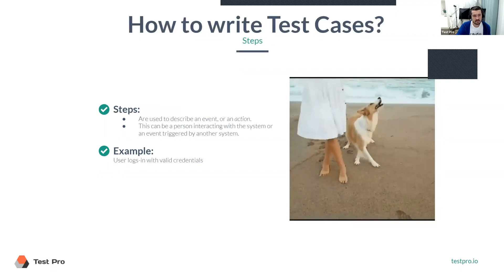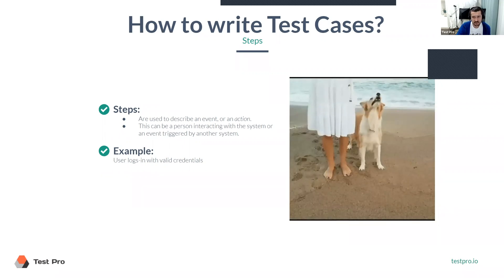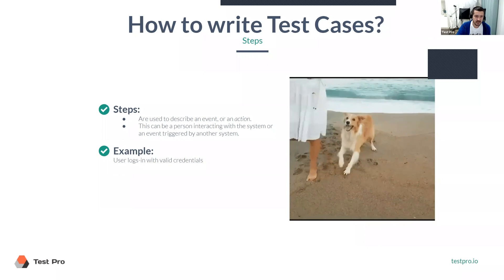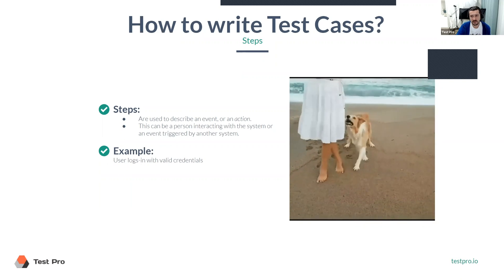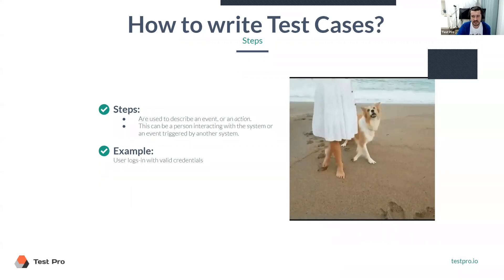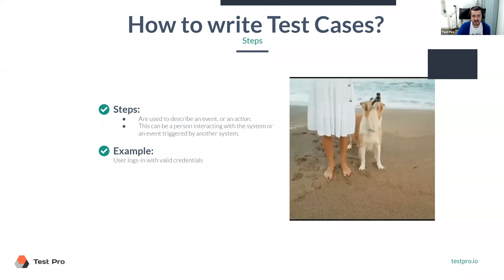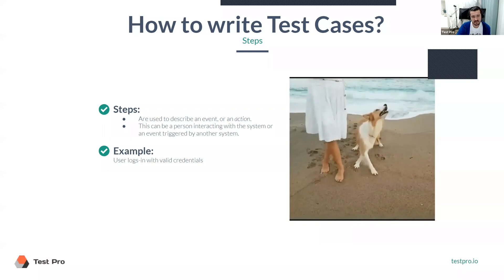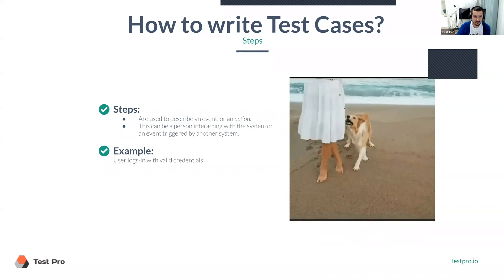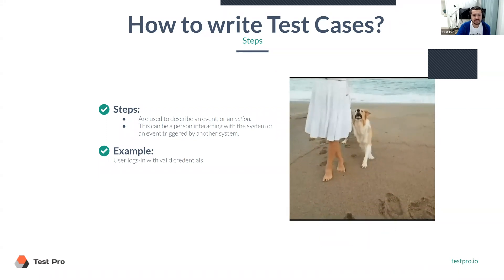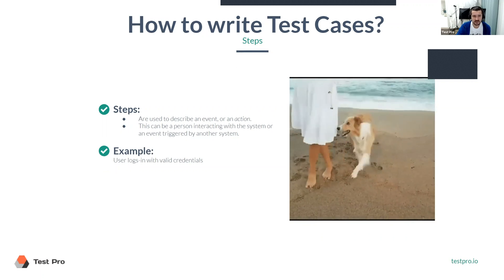The next one is steps. Steps are used to describe an event or action. Usually we say some person — a person action. Remember that slide from the last class? There was a stimulus and there was a response. This is kind of the stimulus — what the user does. Sometimes it's not the user but some other system, but most of the time it's the user. For example, user logs in with valid credentials. This is the actual test — what we should do.